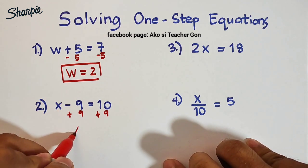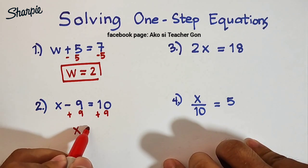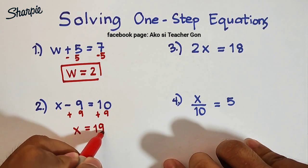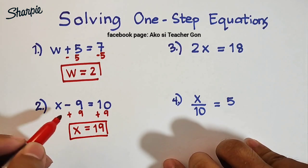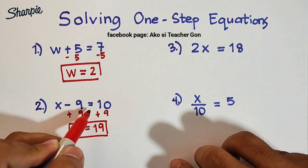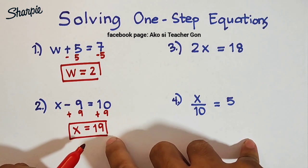So what will remain here is the variable x. We will copy x, then equal to 10 + 9 which is equal to 19. Therefore guys, the value or the exact value of this variable x to make this equal to 10 is equal to 19.